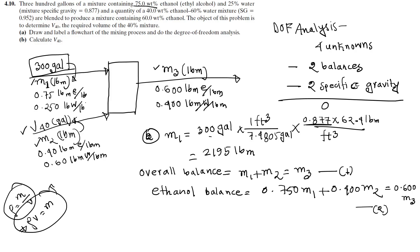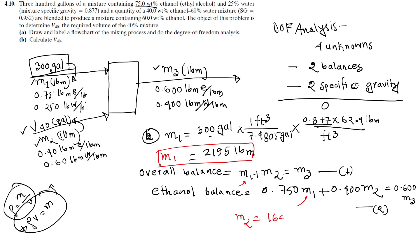Solving equations 1 and 2 together: put M1's value of 195 pounds into the ethanol balance equation. Solving gives us M3 approximately 381.4 pounds. This is how we convert volumetric flow rate to mass flow rate using specific gravity.